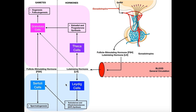In males, we have one cell type — the Leydig cells — that makes all the hormones, and one cell type — the Sertoli cells — that is involved in gametogenesis, the male gamete being sperm. We're going to see a very similar setup in females, except this time the cells are granulosa cells and theca cells.